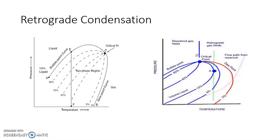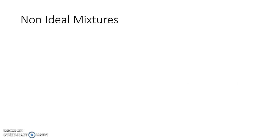However, in day-to-day chemical engineering operations, we are generally not in this critical region — we are always in the normal region — and hence we don't need to worry about the retrograde phenomenon. Now let's look at non-ideal mixtures. We talked about ideal mixtures until now, but the systems we deal with are not always ideal. Non-ideality can creep in.